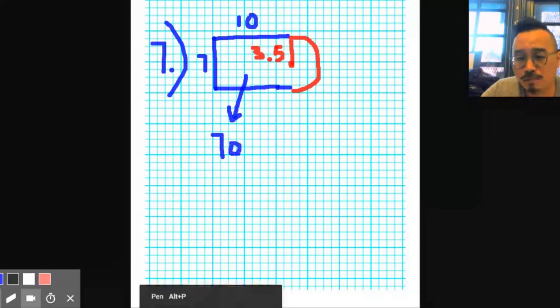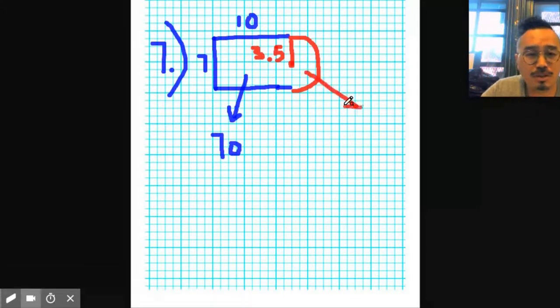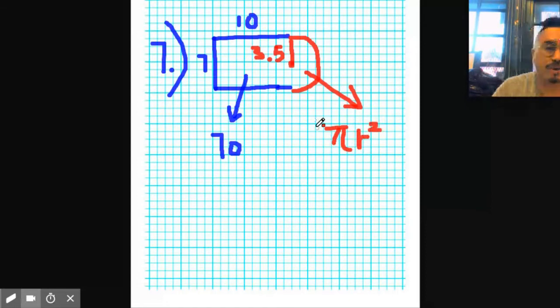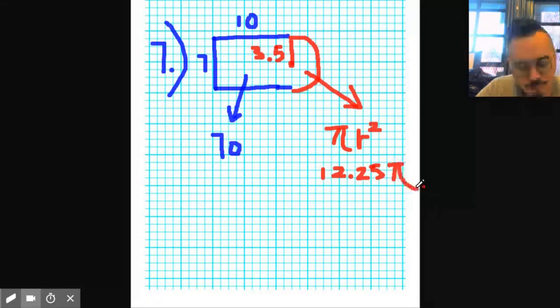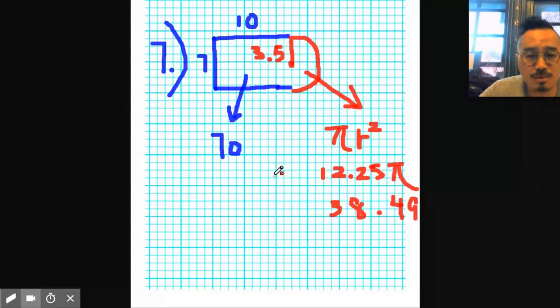Now the other thing you got to worry about is this circle. It's actually not a full circle, it's half a circle. So what you need to do is find the area of this half circle, but let's get the full circle first. What's the area formula? Pi r squared. So radius squared, that's 3.5 squared. 12.25 times pi, so 12.25 pi, that's 38.49.